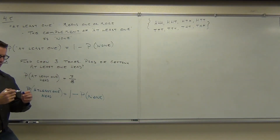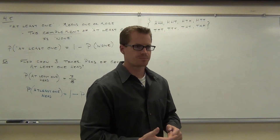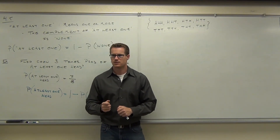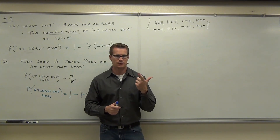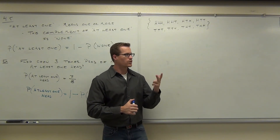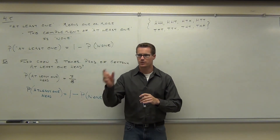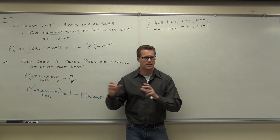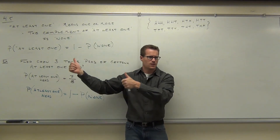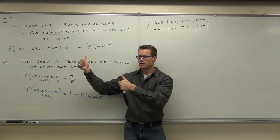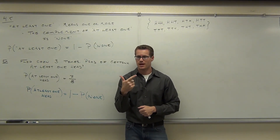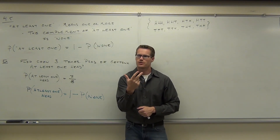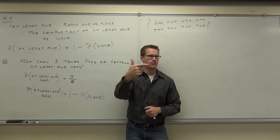We have to think about what does the probability of 'no heads' entail. If you have no heads, what are you getting? Tails. That would be a tail and a tail and a tail. The only way you're going to get none of something is if you have the alternate possibility all three times. If you're flipping a coin three times and looking for at least one head, the complement of 'at least one' is 'no heads' — and no heads means all tails.